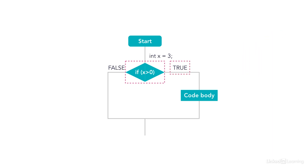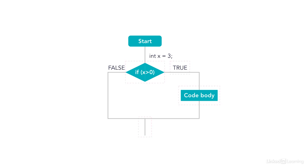Because that is a true statement, we would follow the right-hand side of this flowchart and execute the code body. If this was a false statement, we would go to the other side and continue on, completely skipping over this code body.